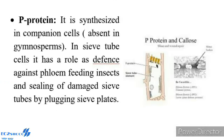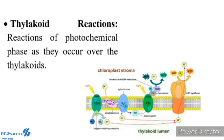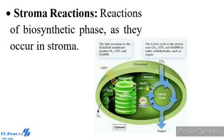P-protein (phloem protein): Synthesized in companion cells, absent in gymnosperms. In sieve cells it has a role as defense against phloem-feeding insects and sealing off damaged sieve cells by plugging sieve plates. Thylakoid reaction: The reaction of the photochemical phase as they occur over the thylakoid. Stroma reaction: The reaction of the biosynthetic phase as they occur in the stroma.